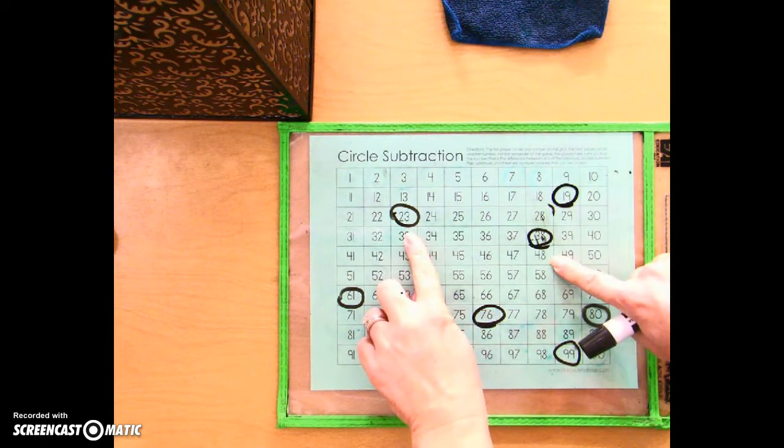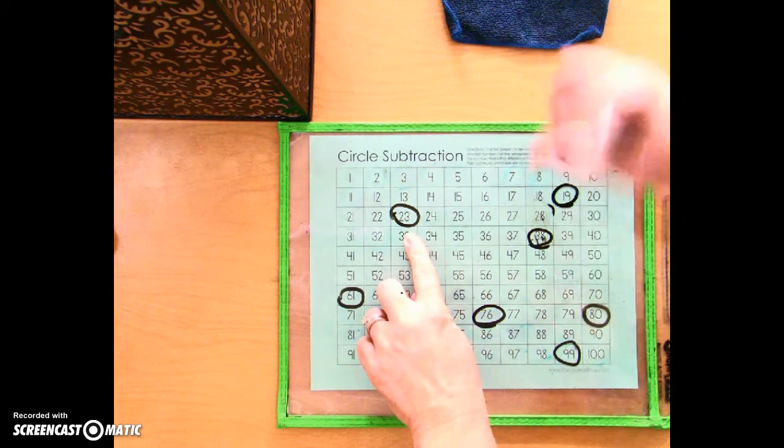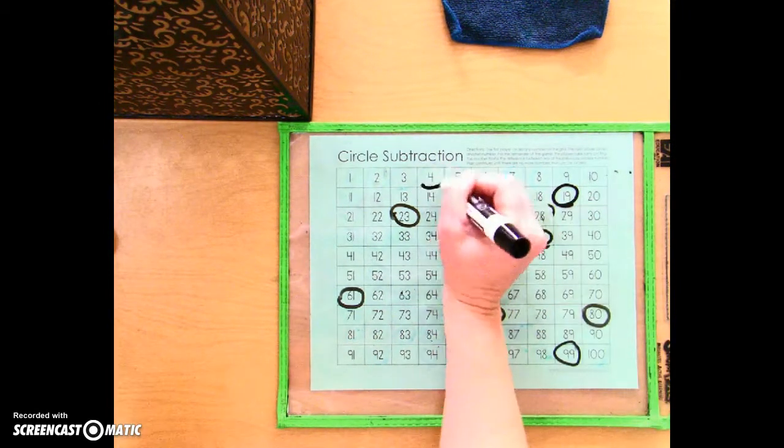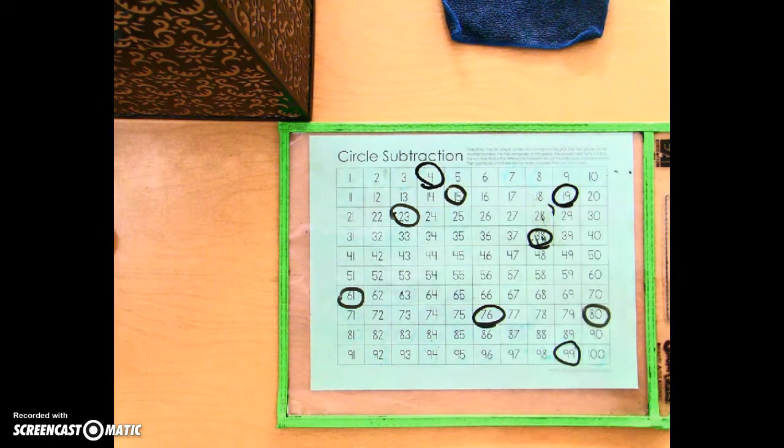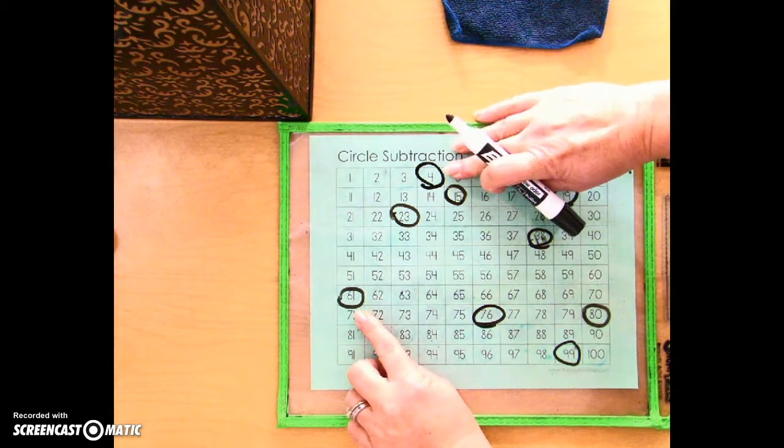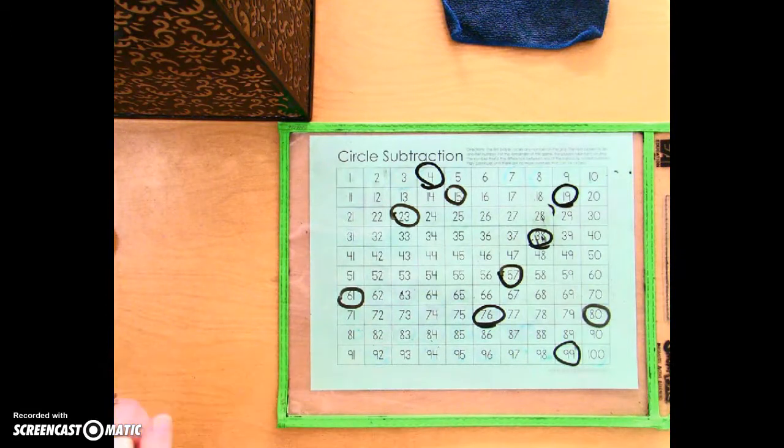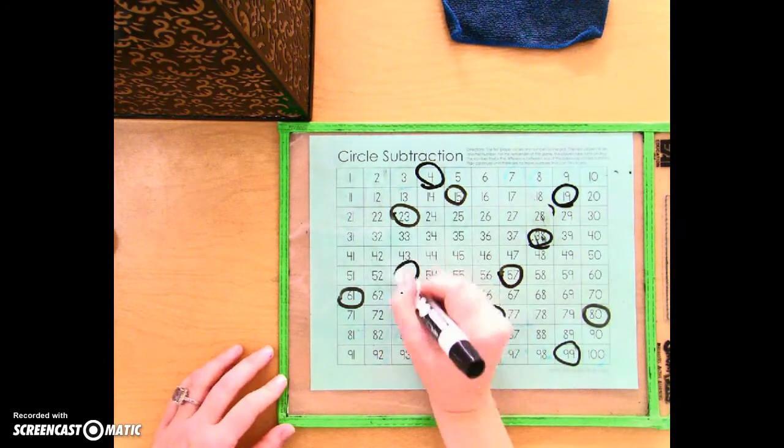Okay, so she's doing 38 minus 23, that's 15. And then I'm going to do 19 minus 15 is 4. It's 57. 57 minus 4 is 53.